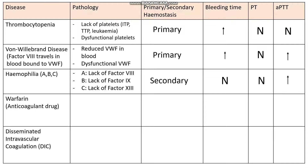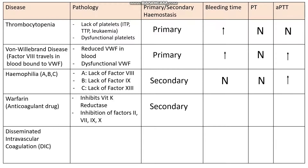Now let's move on to warfarin, an anticoagulant drug that we still use very liberally. Warfarin acts on an enzyme known as vitamin K reductase and inhibits it, thereby inhibiting factors II, VII, IX, and X. Because these factors are part of the clotting cascade, this affects secondary haemostasis, so our bleeding time is going to be normal. We are affecting factor VII, so our PT is going to be raised. We're also affecting factor IX, so our APTT is also going to be raised.